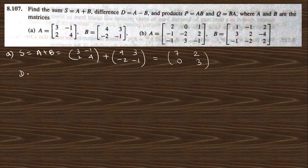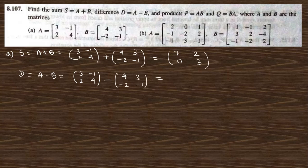The difference is A - B: [3, 2; -1, 4] minus [4, -2; 3, -1]. So: 3-4 = -1, -1-3 = -4, 2-(-2) = +4, and 4-(-1) = 5.